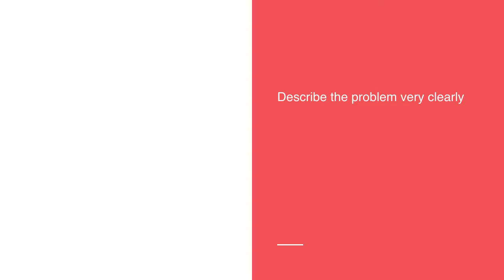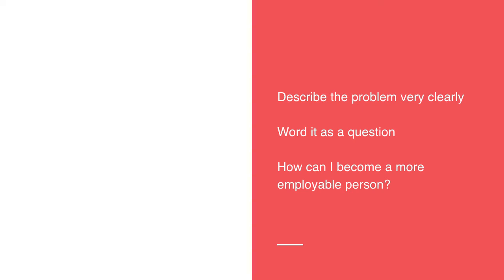The way I recommend to approach this is to word your problem as a question. When you're given an assignment title, it's often just a statement, but your brain likes questions because it clicks into gear and tries to find an answer. So even if the assignment title isn't a question to begin with, try to turn it into one. For example: 'How can I become a more employable person?' That's the problem we're trying to solve in your assignment, and every week we're looking at different ways to do that.